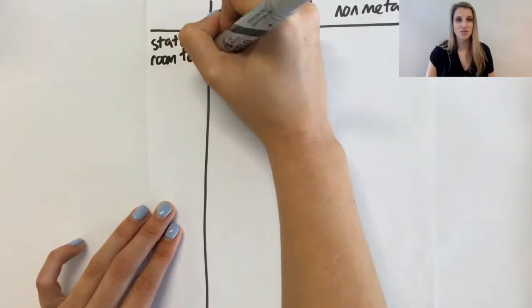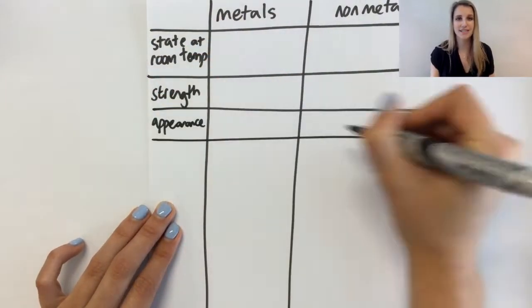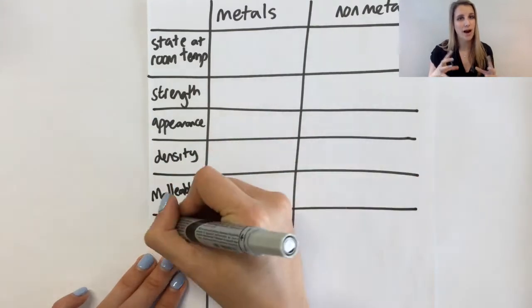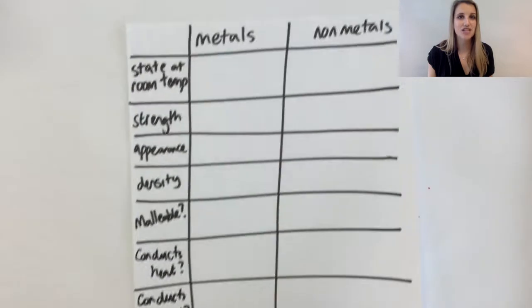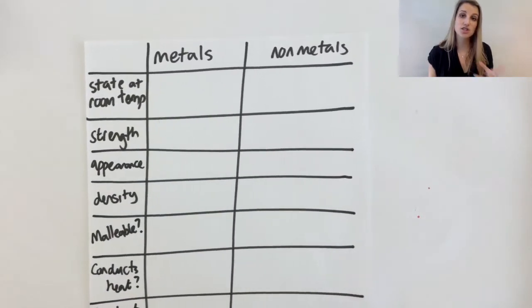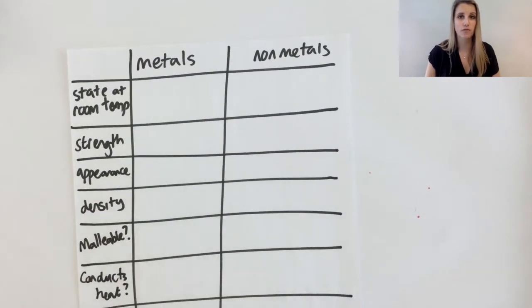These are the properties of metals that you should have a rough idea about and be able to draw comparisons between them. The first one at the top here is their state at room temperature. That means are they solids, liquids or gases, normally at room temperature.